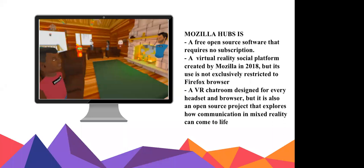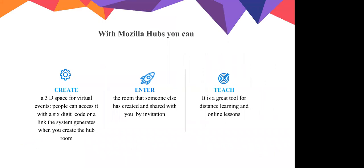You can create a three-dimensional space for virtual events. People can access it with a six-digit code or the link that the system automatically generates when you create the hub room. You can enter a room that someone else has created and shared with you by invitation. I underline that this is a very important step: it's a safe, controlled environment for students because it's closed and people are admitted just by invitation. It's also great for online lessons and distance learning.